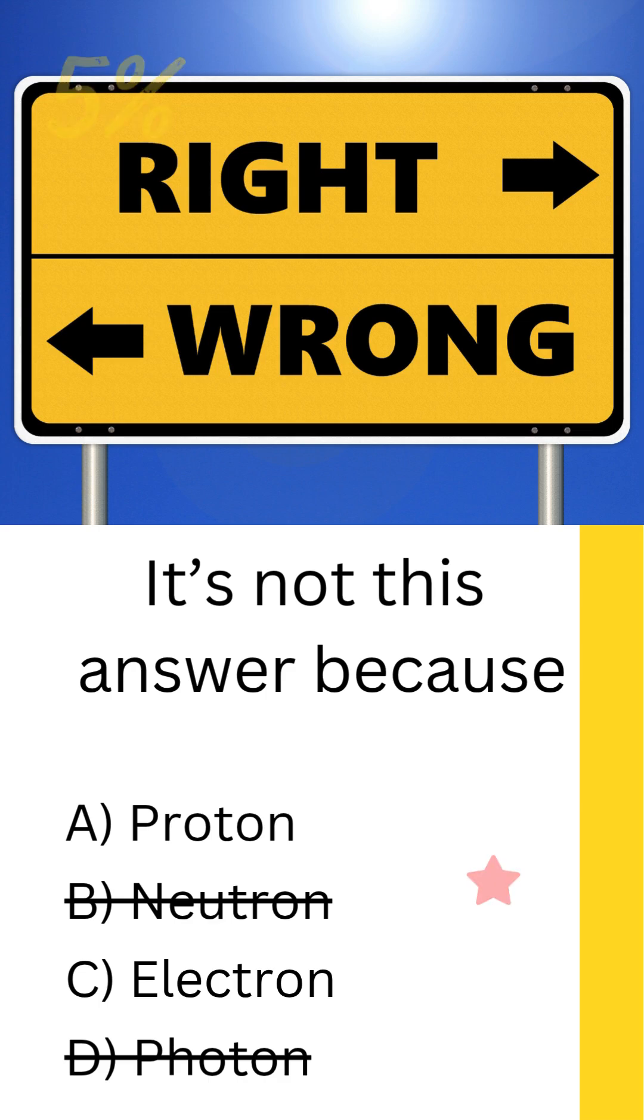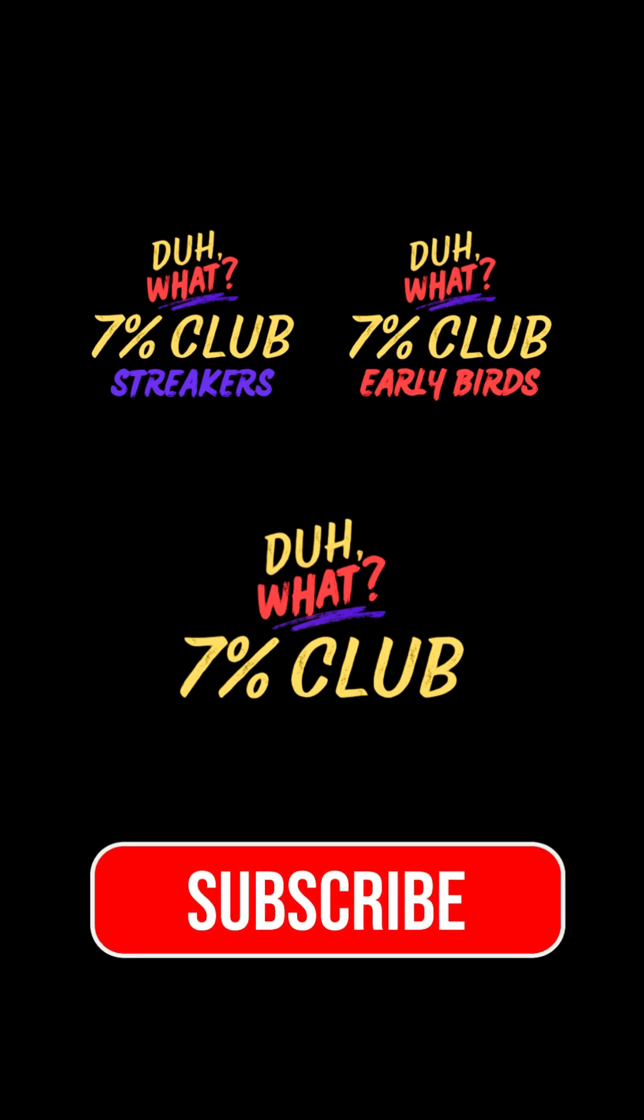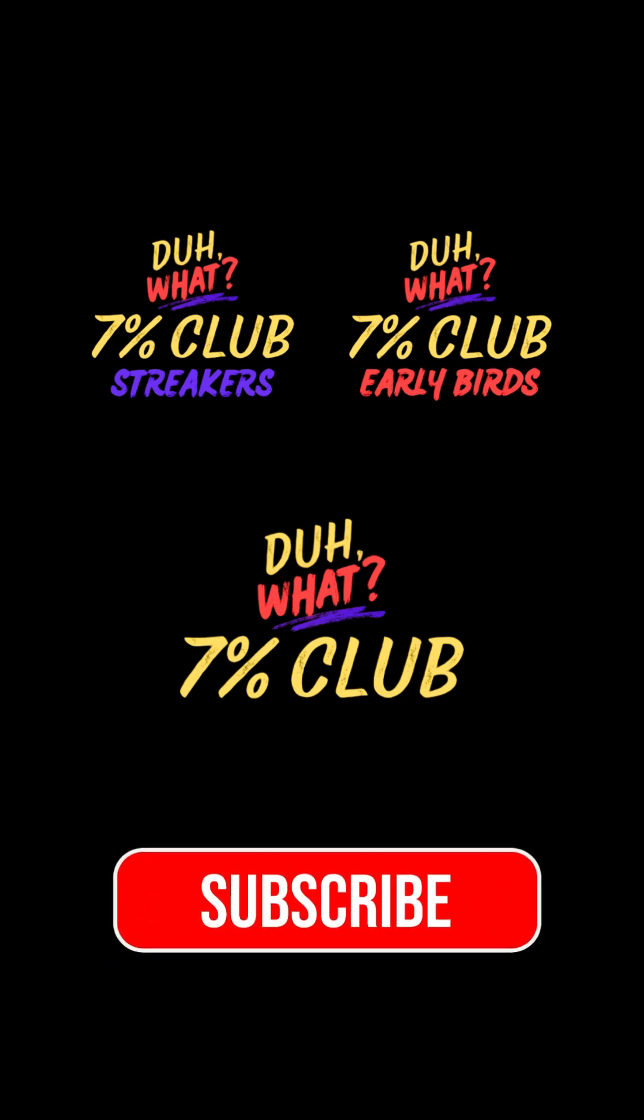suggests, neutrons are neutral. They have no charge at all. Their job is to add mass and stability to the nucleus, not to attract or repel in electric fields. Think you're seven percent club material? Subscribe and prove it tomorrow. And